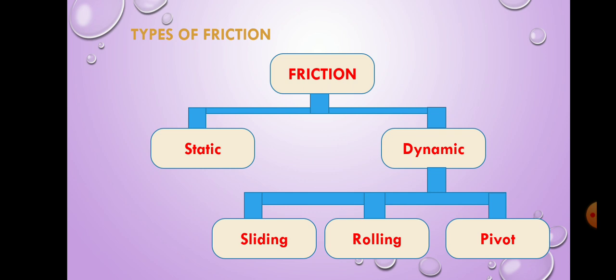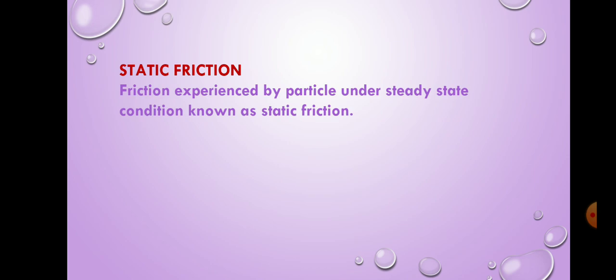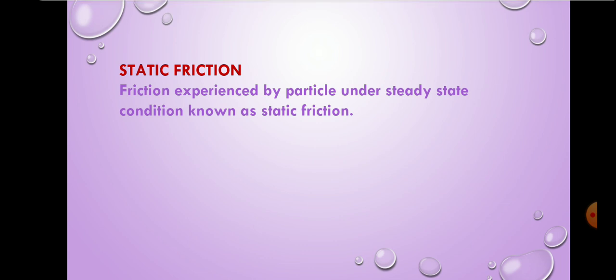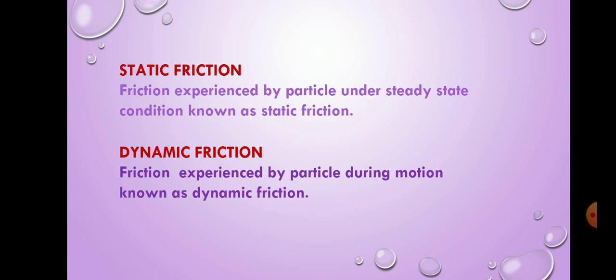Now we move a little bit again. What is static friction? The friction experienced by body under steady state condition, known as static friction. What is dynamic friction? The friction experienced by body during motion, known as dynamic friction. When the body is steady, the friction experienced by every steady object is known as static friction, while traveling or movement of any body gives us dynamic friction.